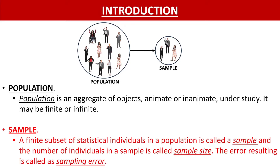Similarly, if you want to see the efficiency or quality of all the firecrackers produced, you will have to test each firecracker and see whether it is functioning or not — that is again impractical. So instead of taking the entire population into consideration, we take a small sample out of that population. A finite subset of statistical individuals in a population is called a sample, and the number of individuals in a sample is called the sample size.